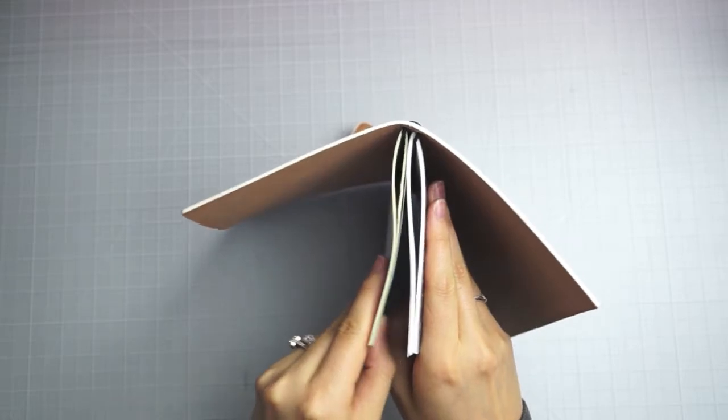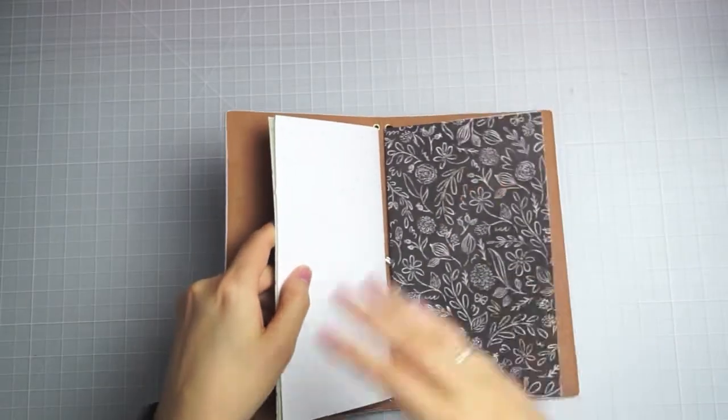And this grid paper is super thin. So you can see I actually have more pages in the grid notebook than I do the white notebook. And it is much thinner. So I had two techniques to cut these down.